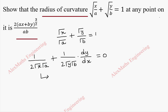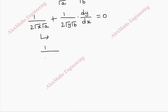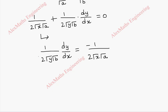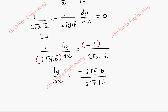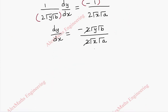We take this term to the other side. The second term 1 by 2 root y root b into dy by dx is minus 1 by 2 root x root a. This entire term will be multiplied with minus 1, so dy by dx is minus 2 root y root b divided by 2 root x root a. We can cancel the 2s and rewrite keeping the constant separate: dy by dx is minus root b by root a into root y by root x.